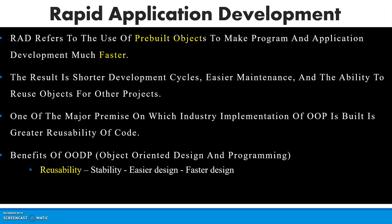Suppose during the application we are building some class or objects, and we can use them repetitively — that is the concept of reusability. Similarly, like we use a function again and again in our program, we call that reusability. That is the first point. The second result is a shorter development cycle, easier maintenance, and the ability to reuse objects for other projects.